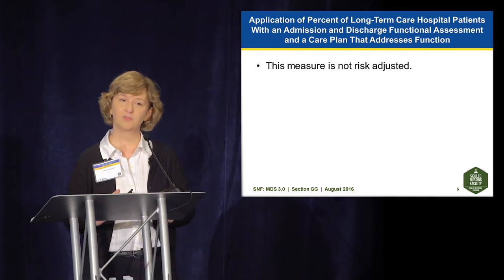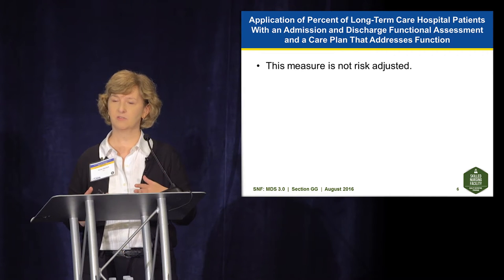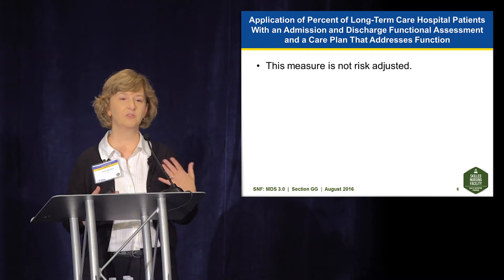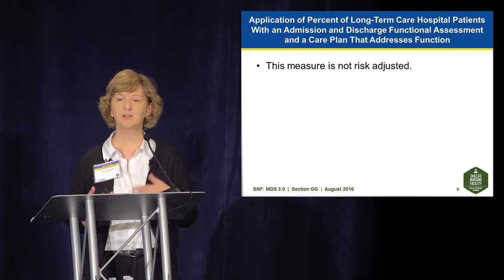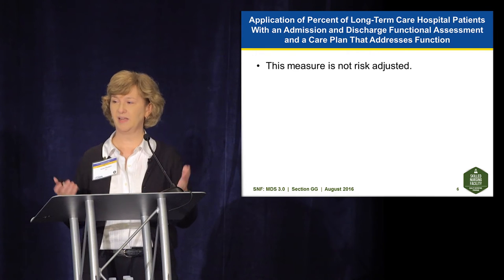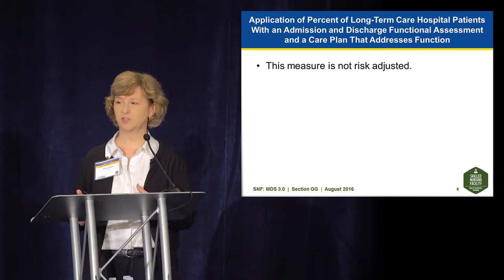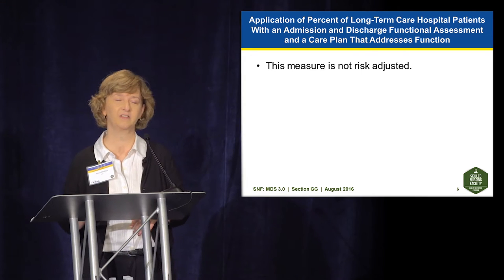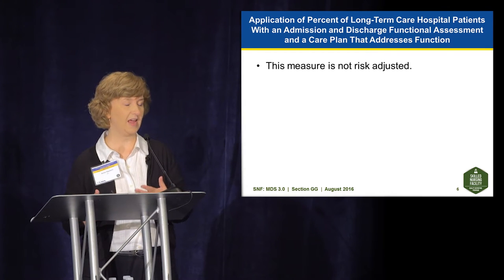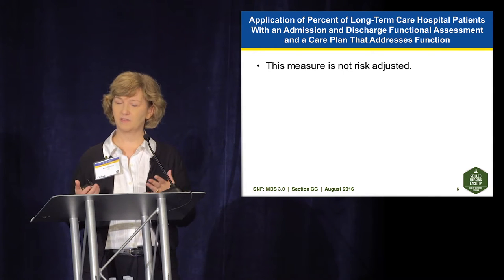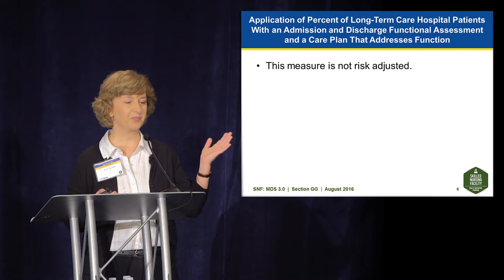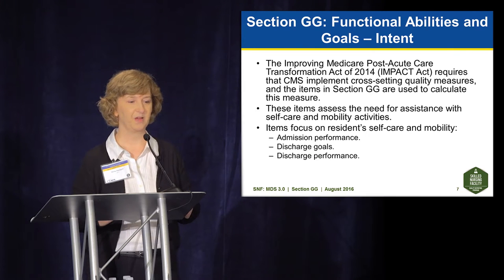This quality measure is not risk adjusted. As part of the functional assessment, we have codes available that indicate the person is too ill or too complex to perform an activity. For example, if a person has a swallowing problem and cannot eat by mouth, you would code 88, indicating a medical issue or safety concern related to swallowing. The complexity of the patient should not affect whether you can code all of the items.